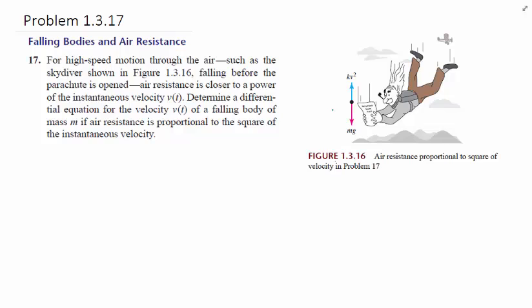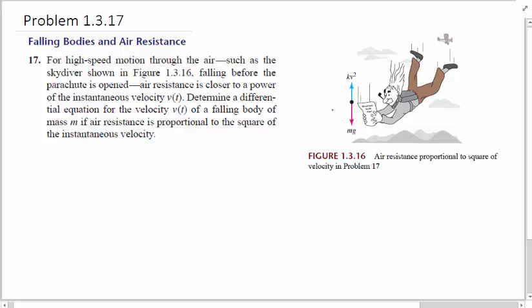High speed motion through the air, such as a skydiver shown here, falling before a parachute is open. The air resistance is closer to a power of the instantaneous velocity instead of just a regular velocity. Determine a differential equation for the velocity of a falling object of mass m, if the air resistance is proportional to the square of the instantaneous velocity.